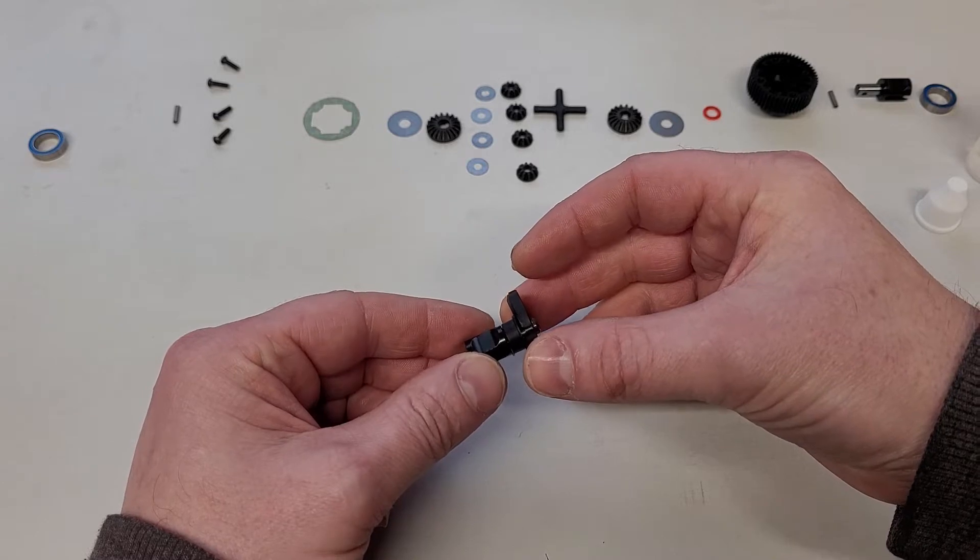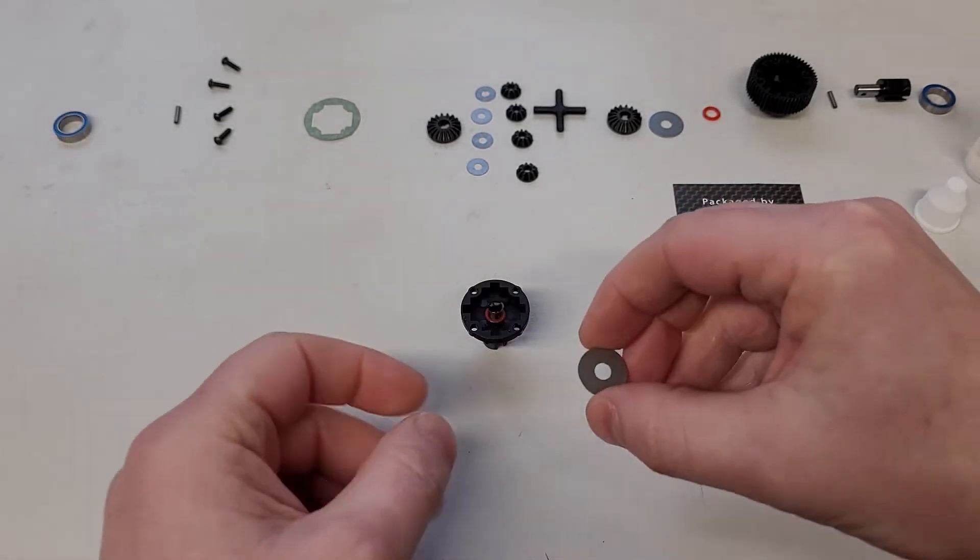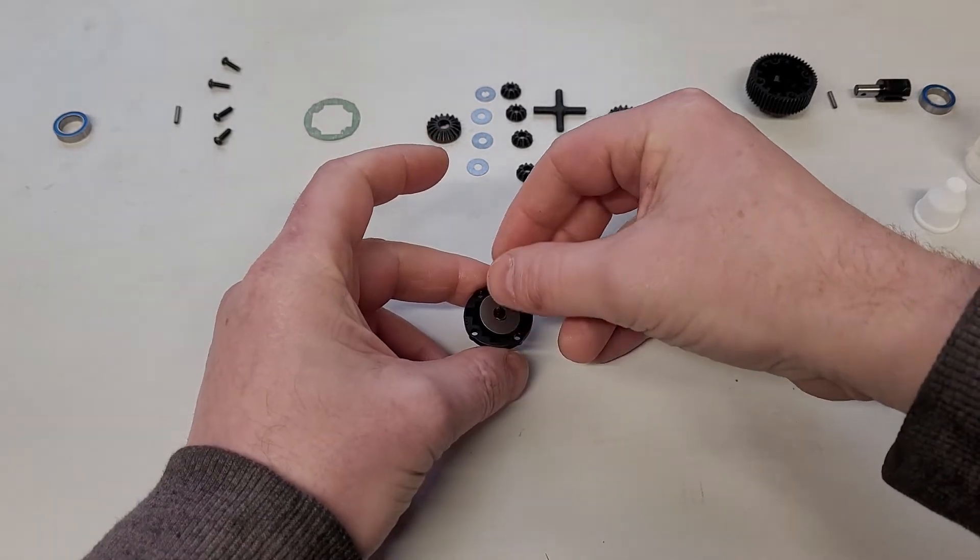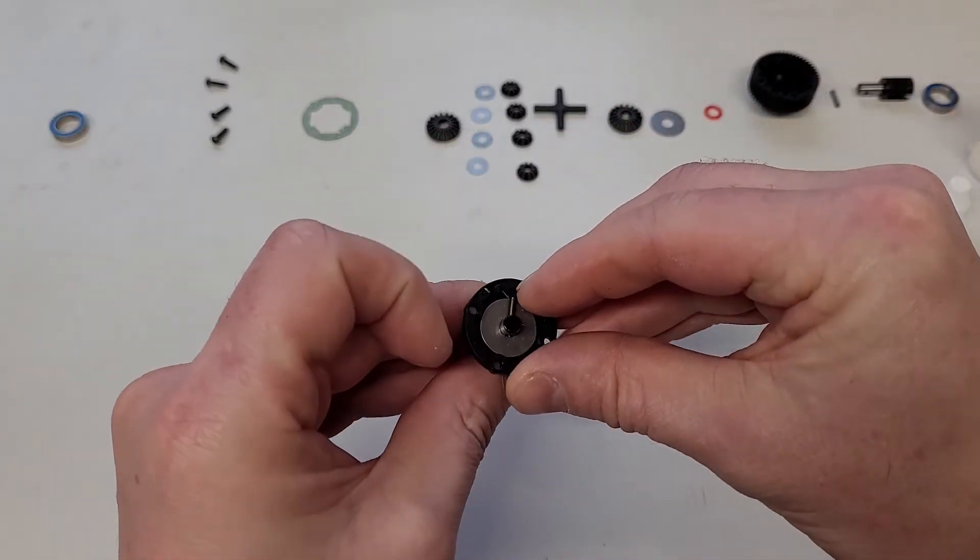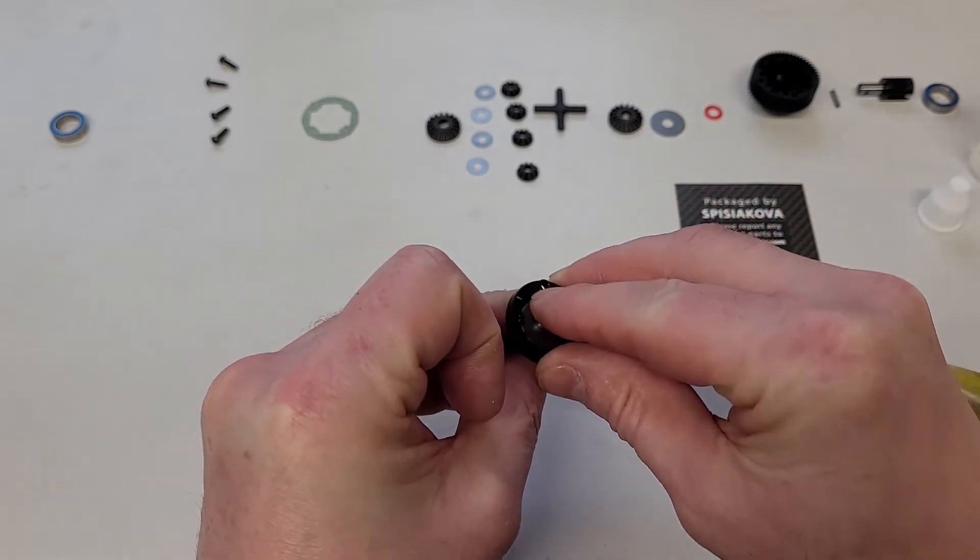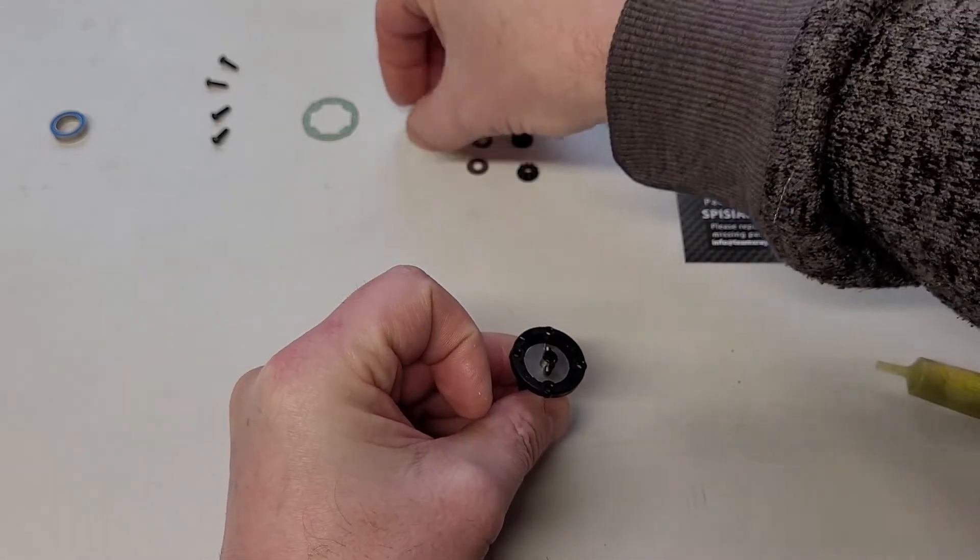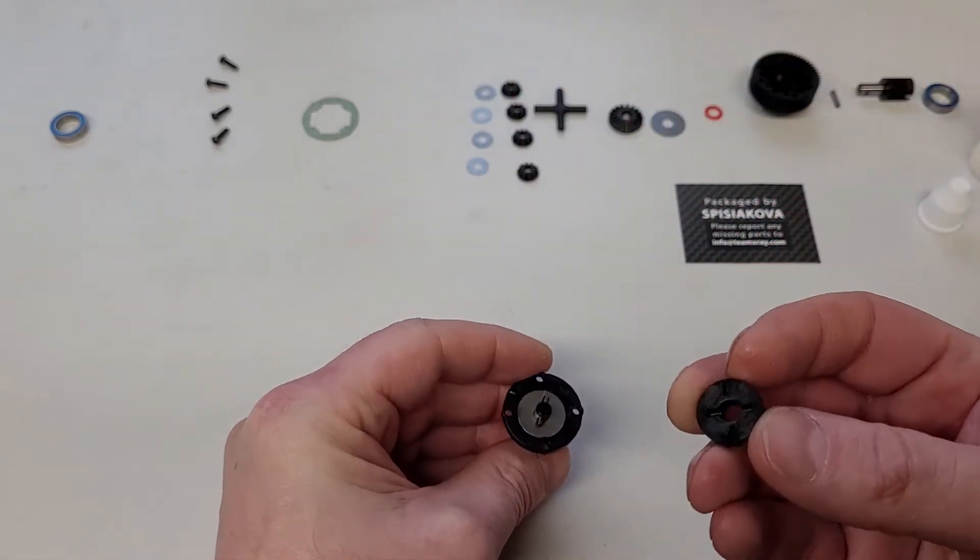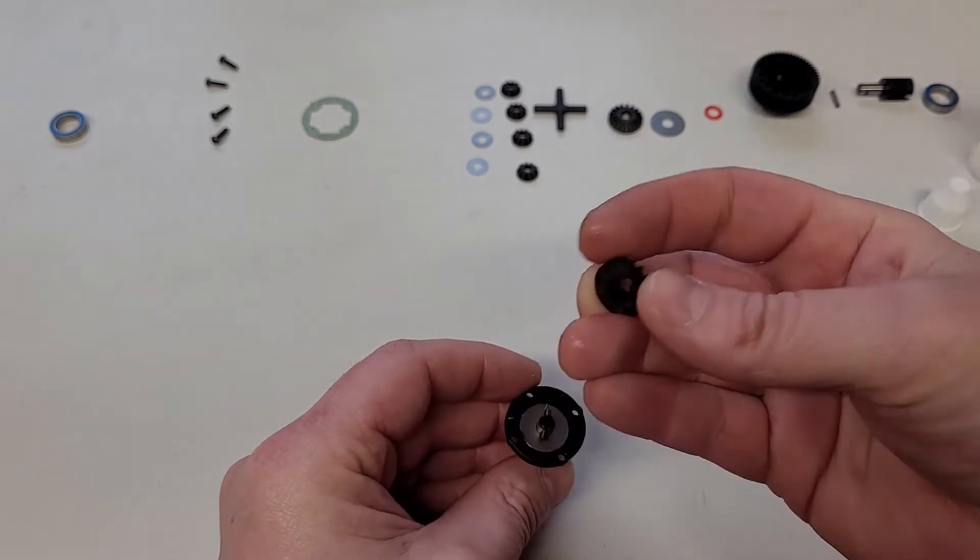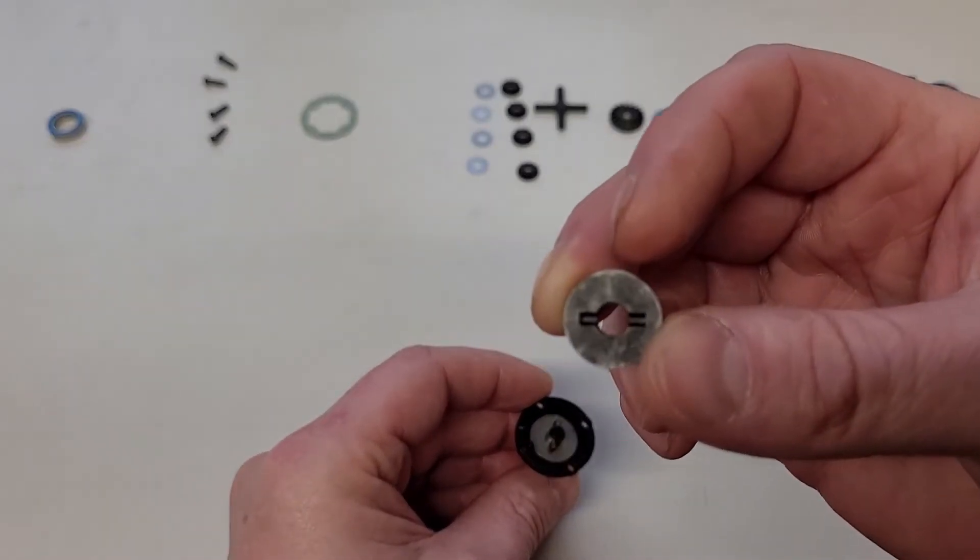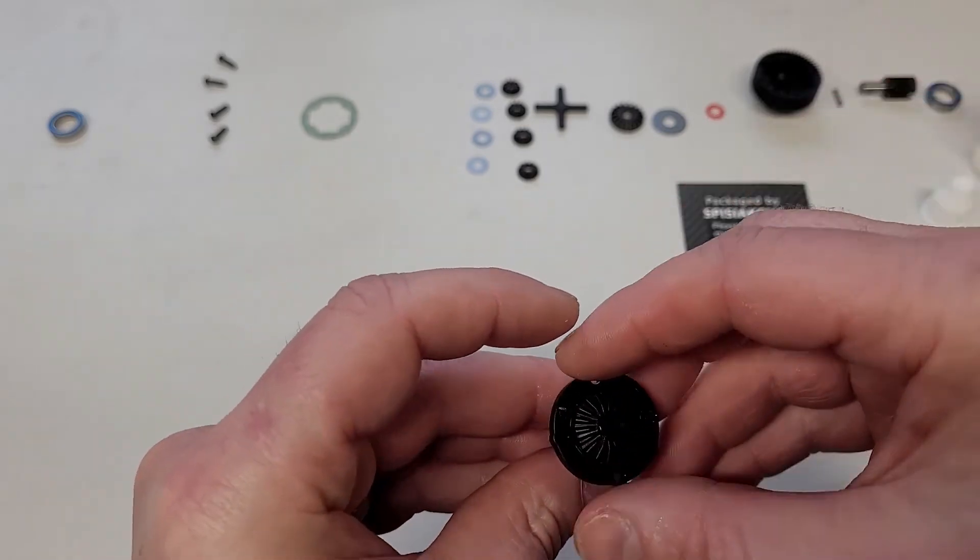Then we have this washer to go on there. The next stage, we just need to put this pin through there like so, and then the diff gear just sits on there. You see there's a groove on the back of it which sits on there like that. Just check that it moves around freely.